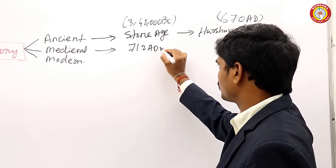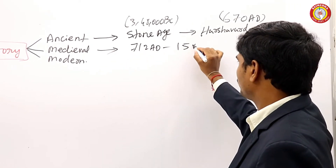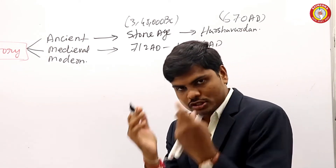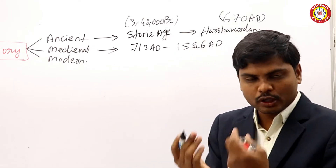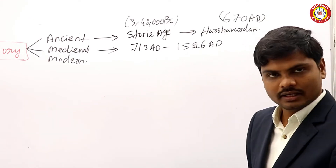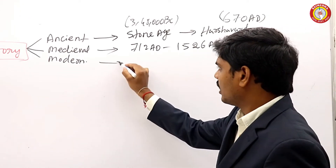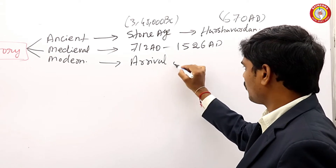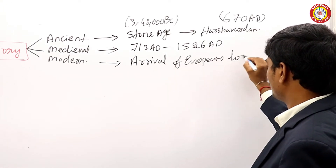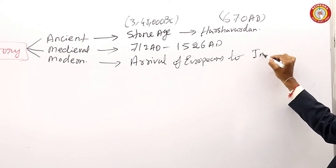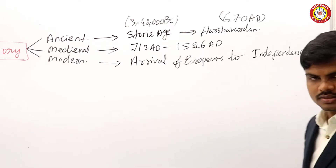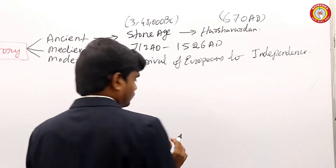Medieval India continues up to 1526 AD. In this period you will come across the Sultans, and you will come across Mughals like Akbar, Humayun, and Aurangzeb. These topics fall in medieval history. Coming to modern India, it spans from the arrival of Europeans to partition, or independence.